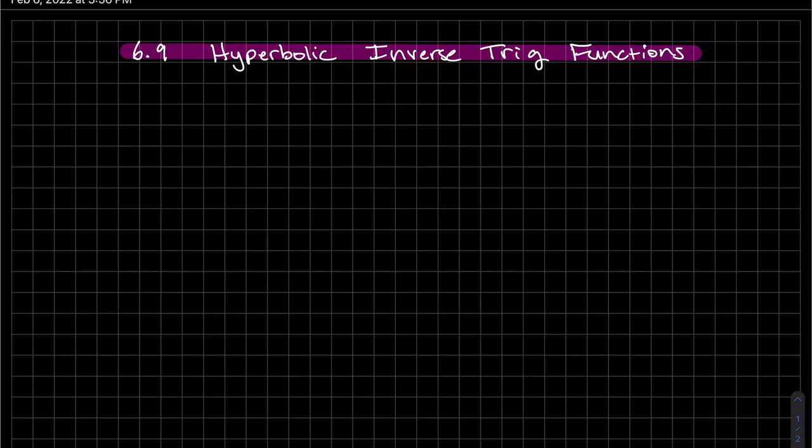Okay, so this is part two of 6.9. We'll be talking about the inverse hyperbolic trig functions. So let's start off with the hyperbolic function. Looks like we need to restrict it because it's not one-to-one.